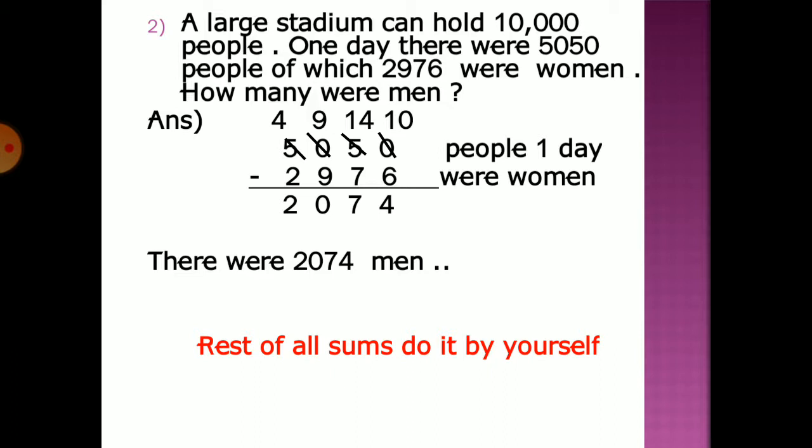One day there were 5,050 people, of which 2,976 were women. To find how many were men, we will subtract 5,050 minus 2,976. The answer is 2,074. So there were 2,074 men.